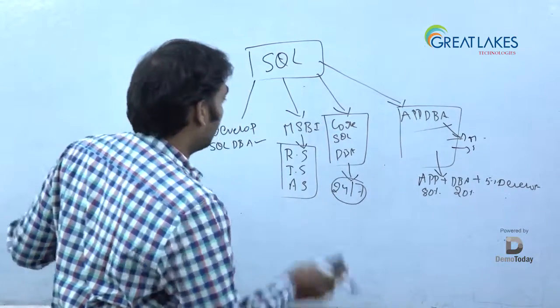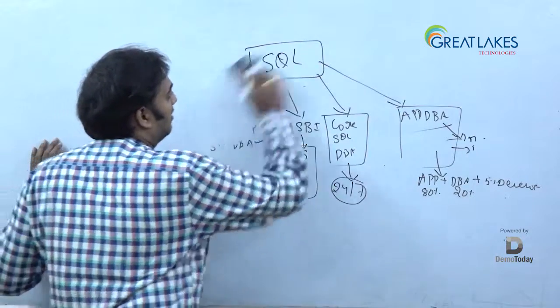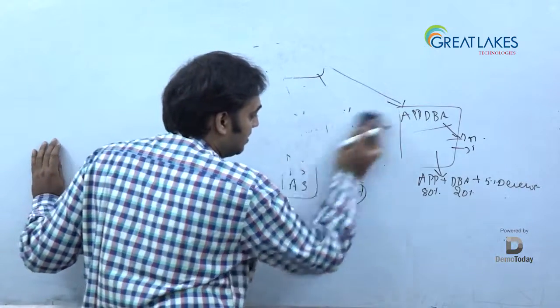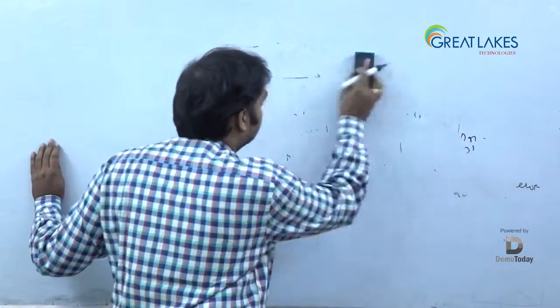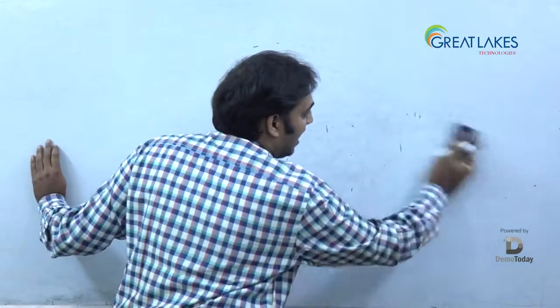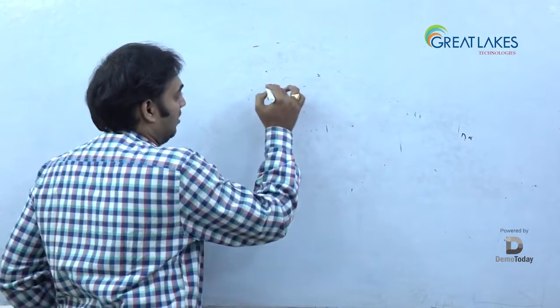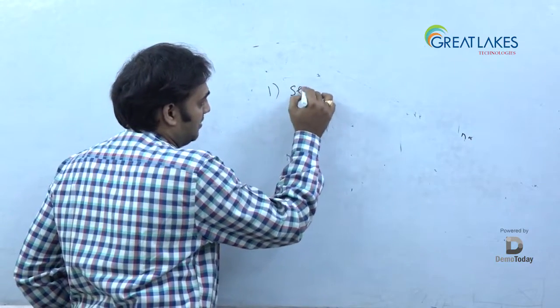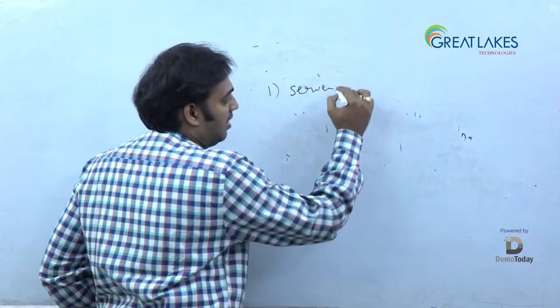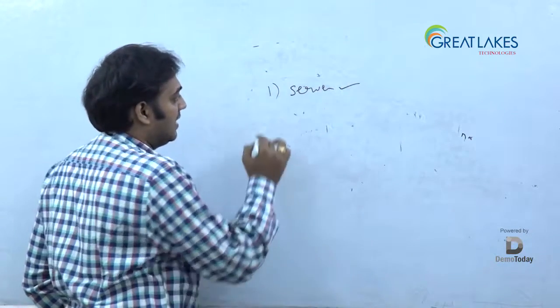When I say about DBA, what are the different technologies we have? What are the different steps in DBA you will be learning in this class? First thing, we talk about server architecture. What is SQL server and what is the architecture of SQL server? Second thing, there is something called database architecture.